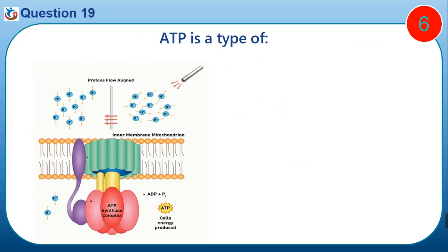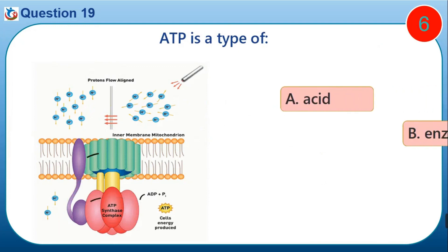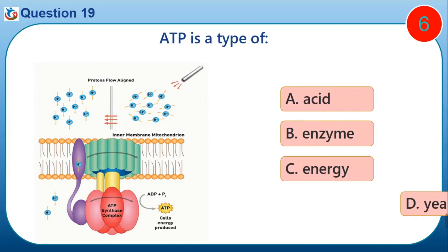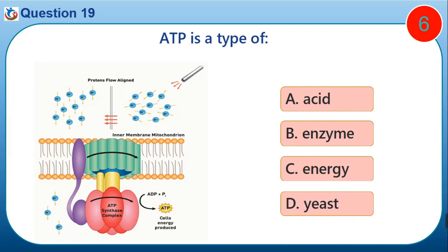Question nineteen: ATP is a type of — A) acid, B) enzyme, C) energy, D) yeast.